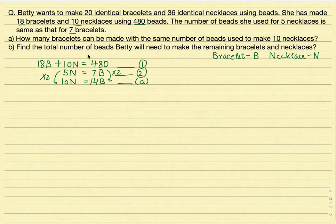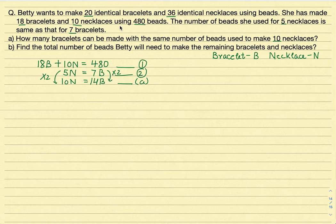For Part B, we need to find the total number of beads Betty will need to make the remaining bracelets and necklaces. She wanted to make 20 bracelets and 36 necklaces. Out of 20 bracelets she already made 18, and out of 36 necklaces she already made 10. Before we can proceed, we need to find out how many beads are required to make one bracelet and one necklace.